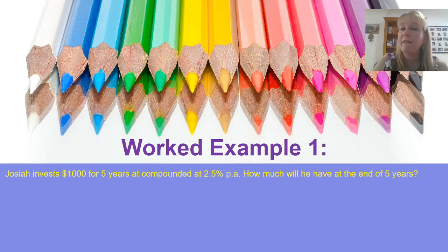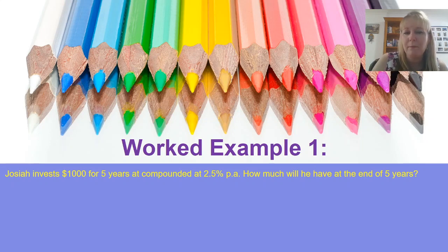Okay, let's look at some worked examples. In our first example, I'm going to do something fairly simple. We've got $1,000 being invested by Josiah for five years. It's compounded at two and a half percent per annum. That means we've only got one compounding period. So we can just use the QCAA's formula exactly as it is.